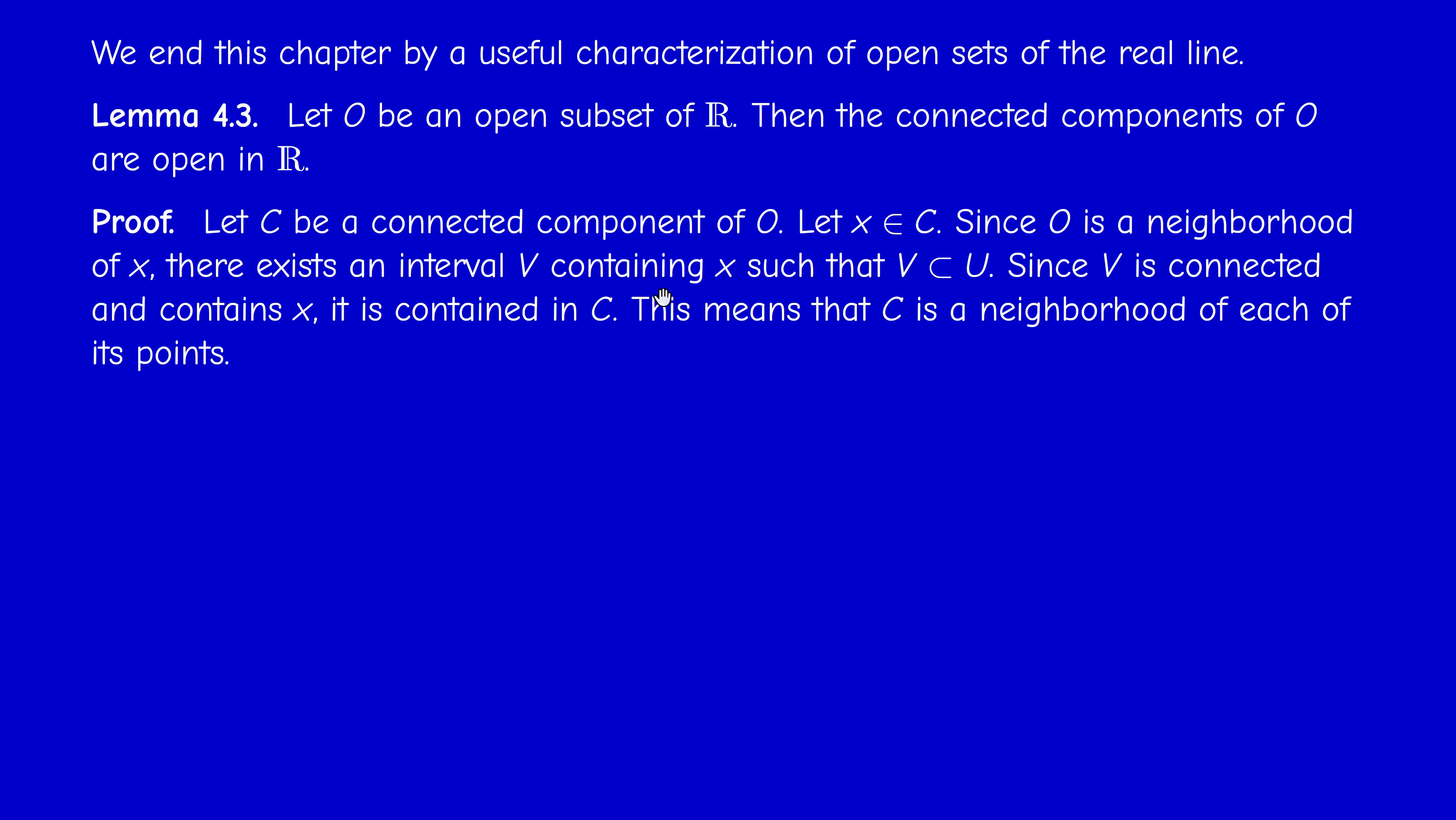And this means that C is a neighborhood of x. Since x was arbitrary, this means that C is a neighborhood of all its points, and therefore it's open. The same reasoning works actually in ℝⁿ, but instead of an interval we have a ball.